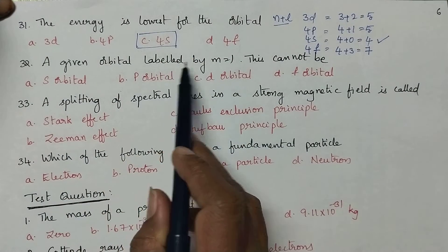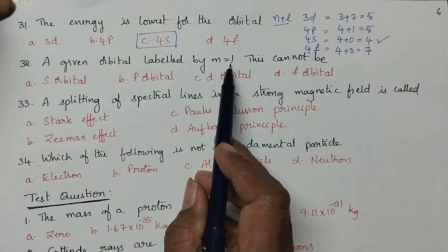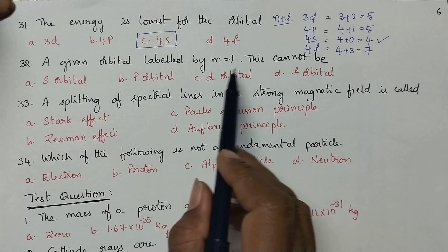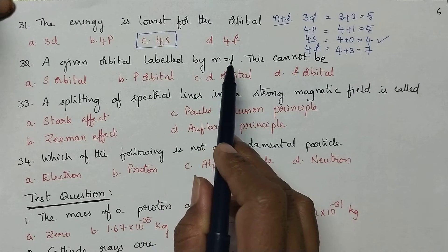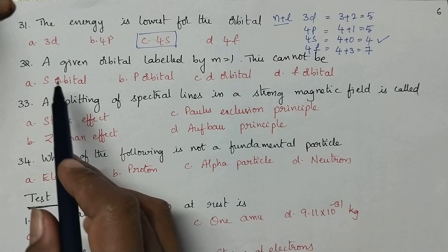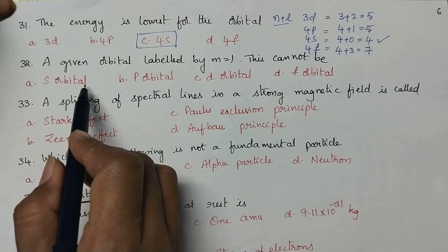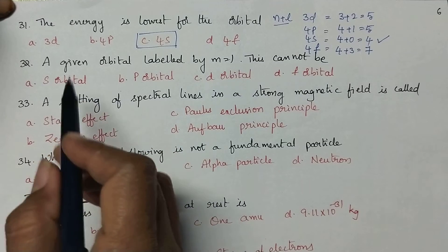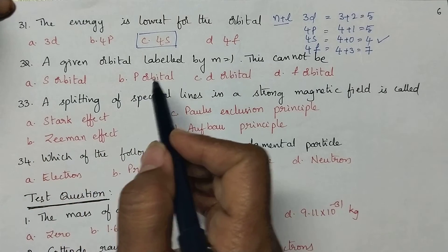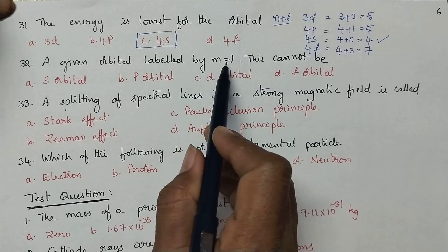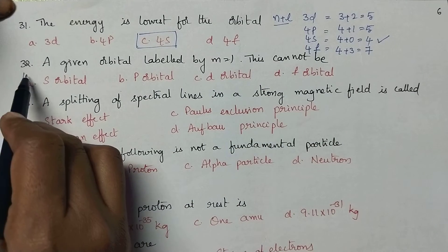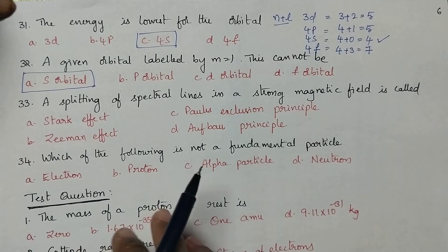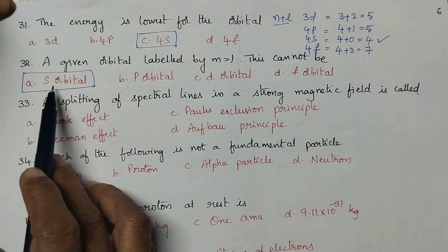A given orbital labeled by m equal to 1 — this cannot be: generally the m value depends upon the l value. If m is equal to 1, then for the given options, if it is an s orbital, what is the m value? m is equal to 0 because l is equal to 0. In the remaining cases m may be equal to 1, but coming to option A, it is s orbital. For s orbital, always m is equal to 0. So the right option is option A.